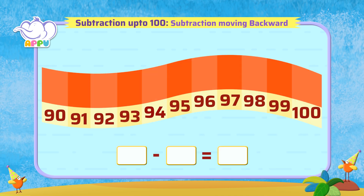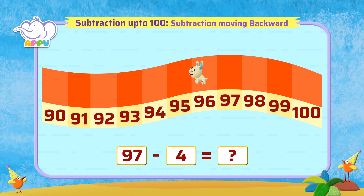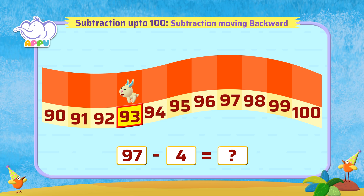What is 97 minus 4? Count backwards by 4: 96, 95, 94, 93. The answer is 93. That's it!